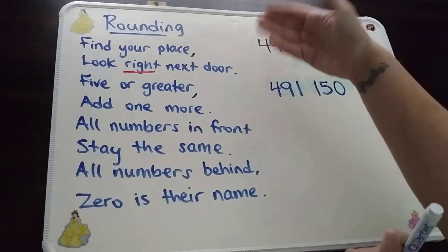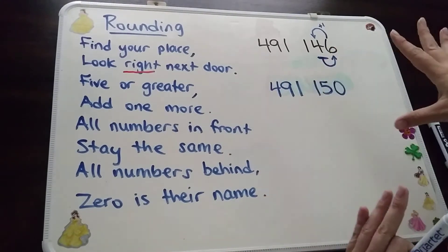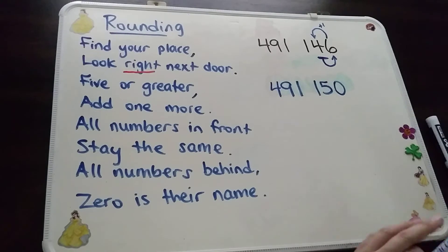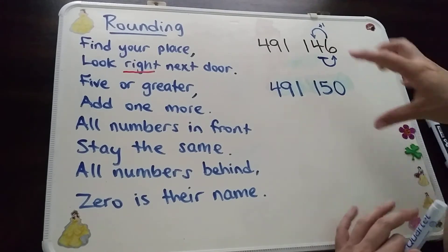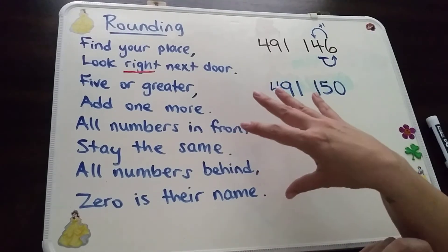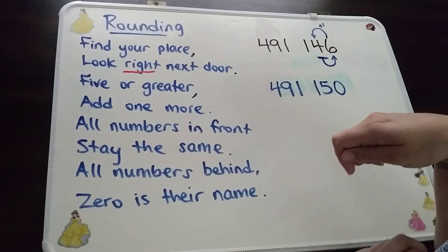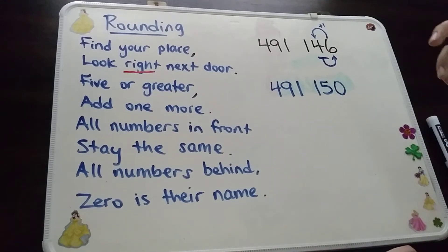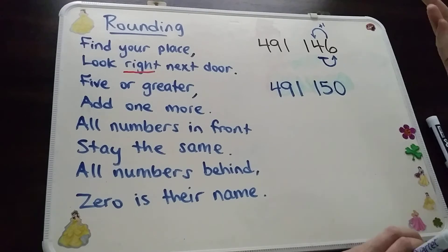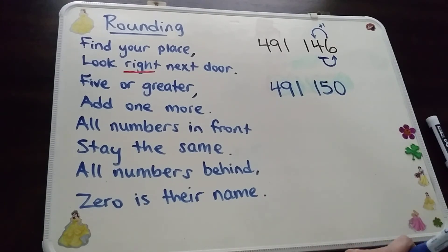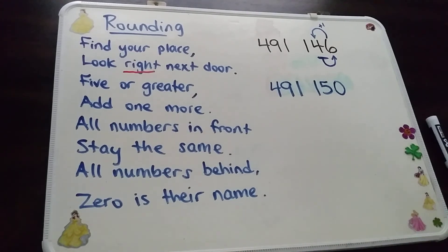And again, the poem works for any number — it could be in the hundreds, the thousands, the millions. Even when you start working with decimals, this poem still works. So it's a really great strategy to help you start learning about rounding so you don't forget, and then eventually you can do it without the poem. So that is rounding numbers.